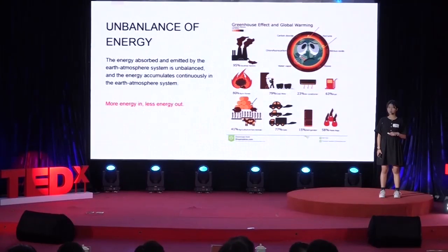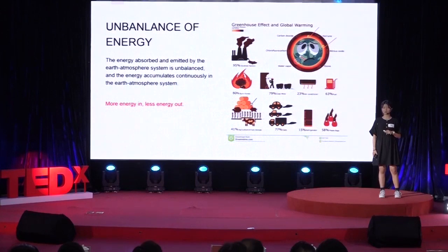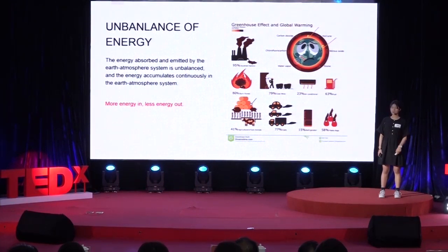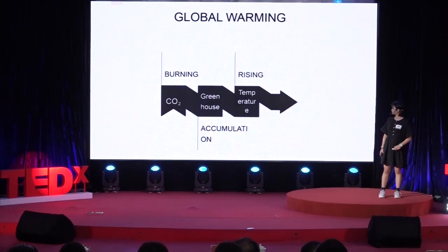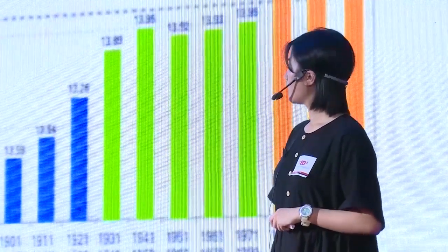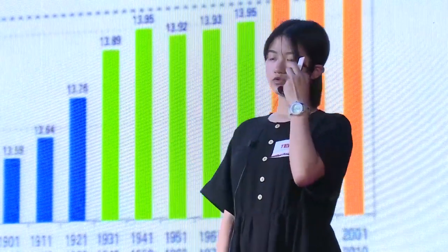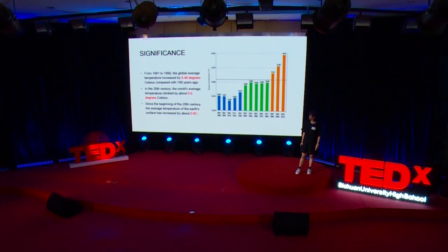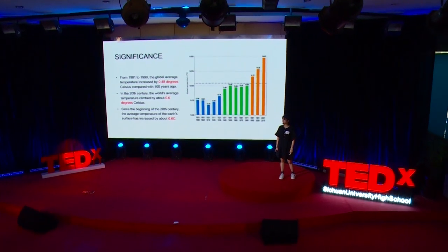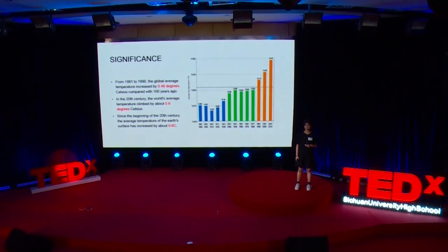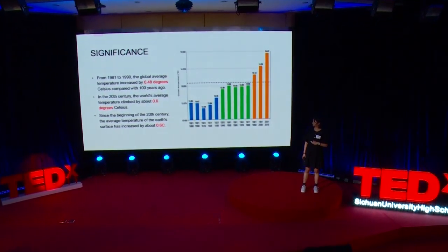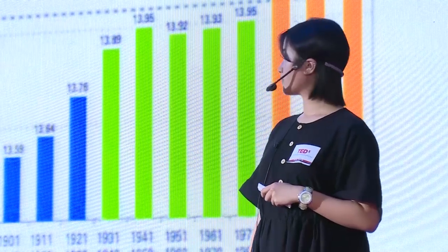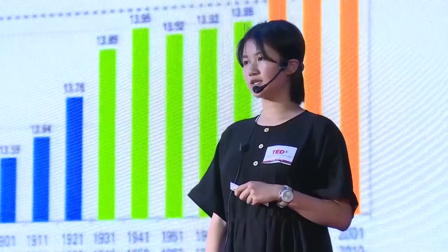With the accumulation of greenhouse gases, the energy absorbed and emitted by our earth's atmosphere is not balanced — in short, more energy in but less energy out. This leads to rising global temperatures. Maybe this graph is easier to understand. From 1981 to 2019, the global average temperature increased by 0.48 degrees Celsius compared with 100 years ago, and in the 20th century the world's average temperature climbed by about 0.6 degrees Celsius.